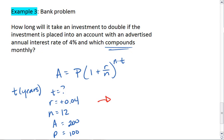I plug all of this in. I get 200 equals 100 times 1 plus 0.04 over 12 to the 12 times T.